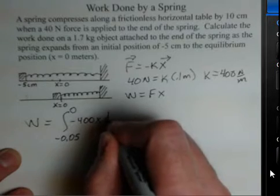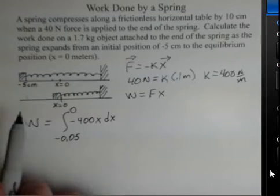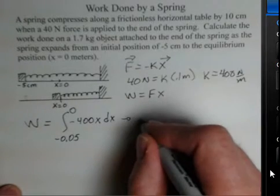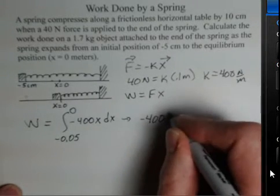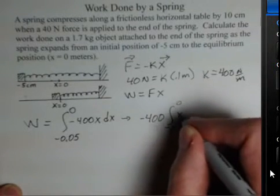And then I have to add up all the little infinitesimal displacements that occur here. So in doing this, we can take the minus 400 outside the antiderivative.